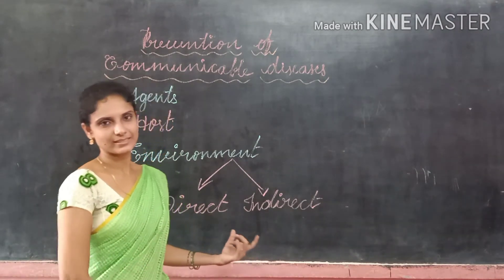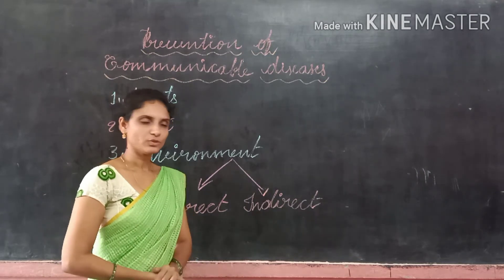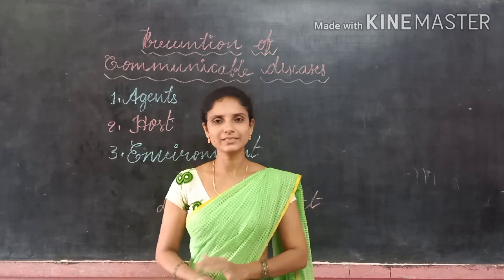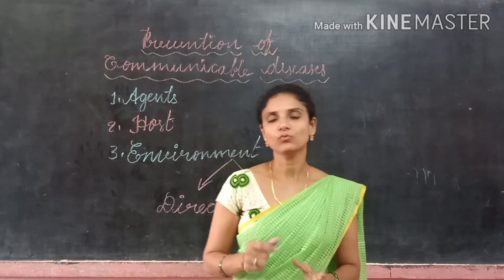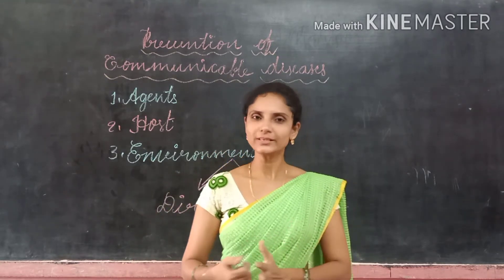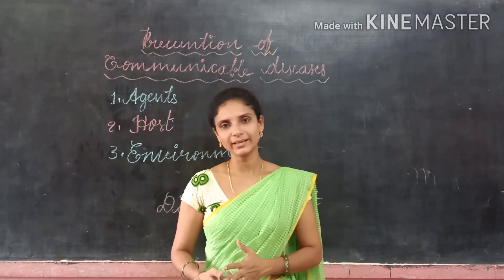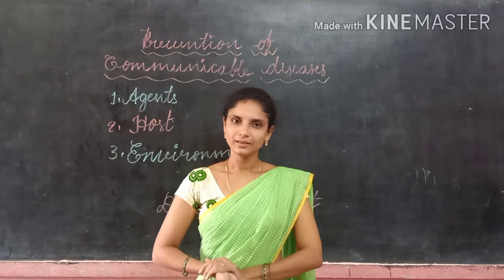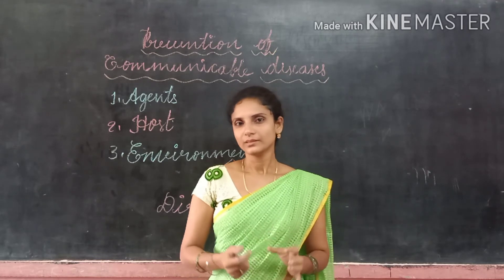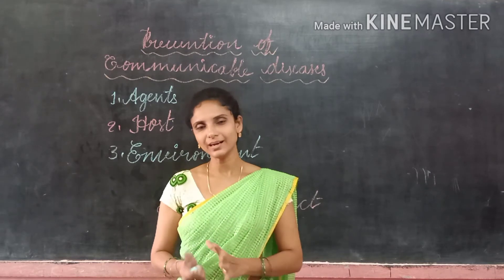These are the two ways diseases are spread: direct and indirect method. So how can we prevent these communicable diseases? What is meant by prevention? Prevention means the action of stopping something from happening. If we stop any action before it happens, that is called prevention. There is a well-known phrase: prevention is better than cure.